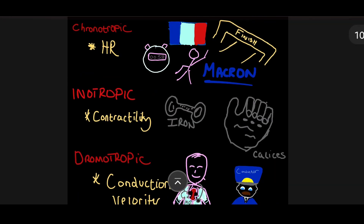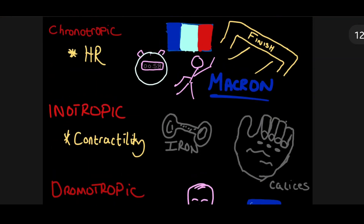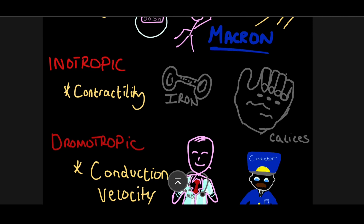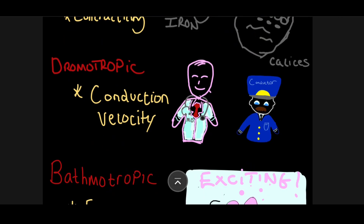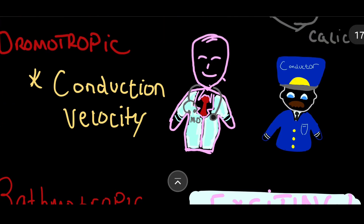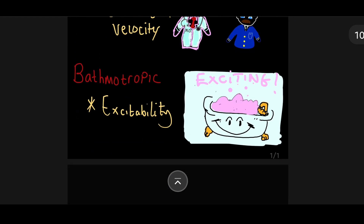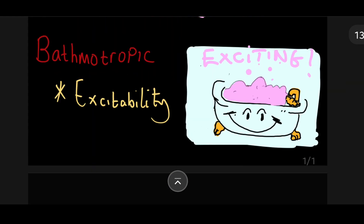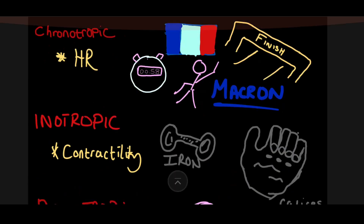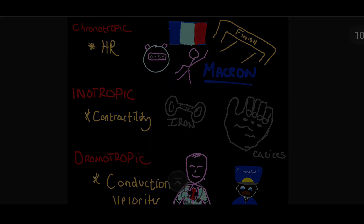Just in summary again: Chronotropic — all about heart rate, think of Macron in a marathon. Inotropic — think of iron, contractility. Dromotropic — first two letters, doctor, in conversation with the conductor, conduction velocity. Finally, bathmotropic — exciting, excitability. Hope you guys enjoyed. Thank you.